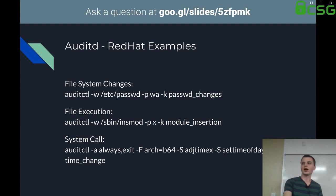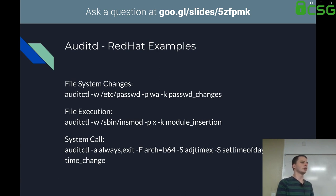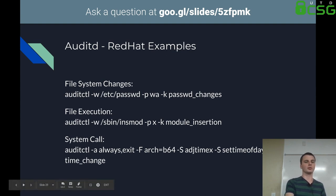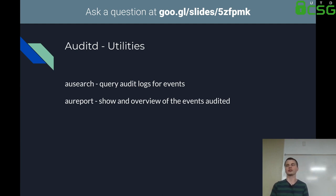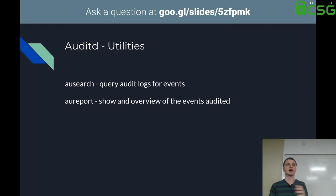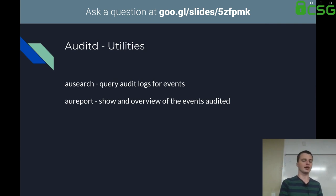As an example of auditing system calls: if someone's trying to adjust the time of day, that could be used to DOS someone and break a lot of their crypto by setting their time way back. The most useful tools for end users are ausearch, which allows you to query audit logs for events — so if I'm confident Andrew has been modifying things on my box, I can check all the audit events for his user. And then aureport, which takes the default audit rules and shows you a list of those events.